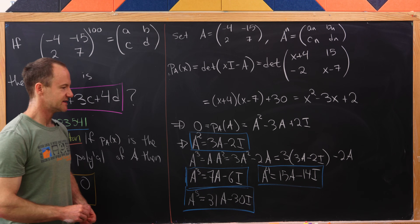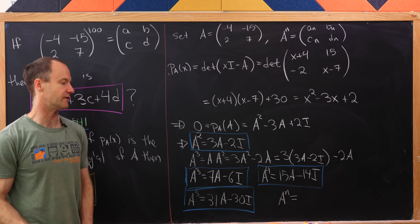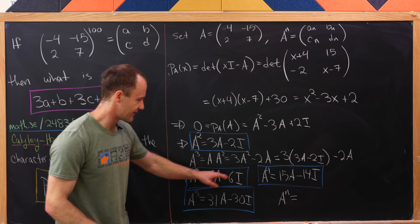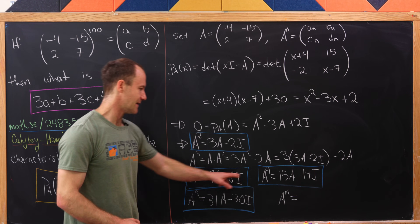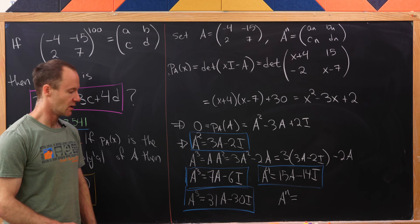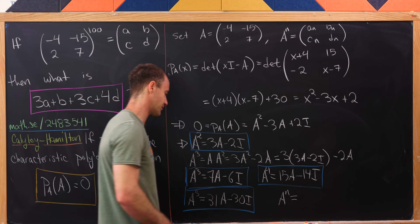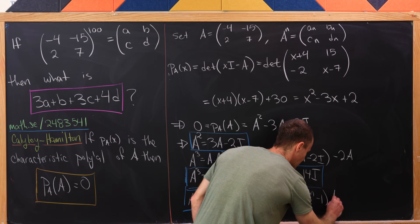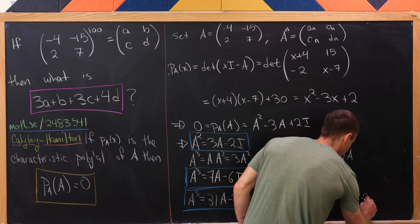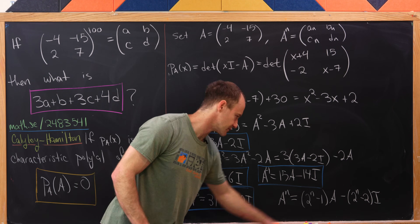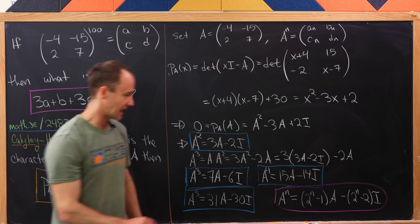Looking at these results — coefficients 3, 7, 15, 31 — these are all one less than powers of 2: 4 minus 1, 8 minus 1, 16 minus 1, 32 minus 1. So it looks like A to the n equals (2^(n-1))A minus (2^(n-2))I. Let's put a box around that — that's the claim we'll prove on the next board.